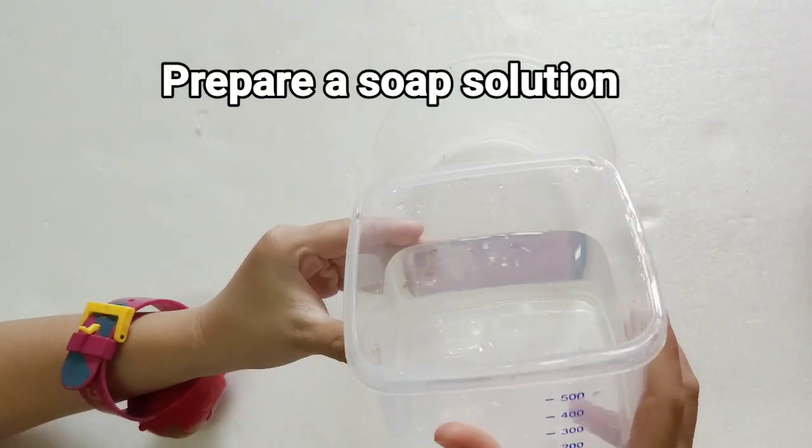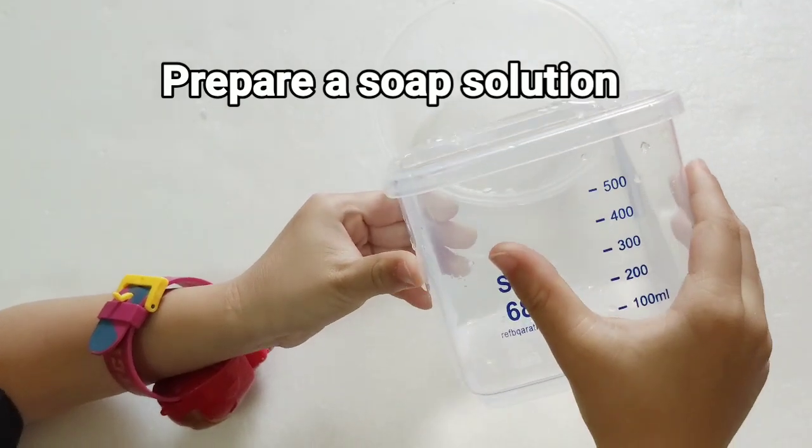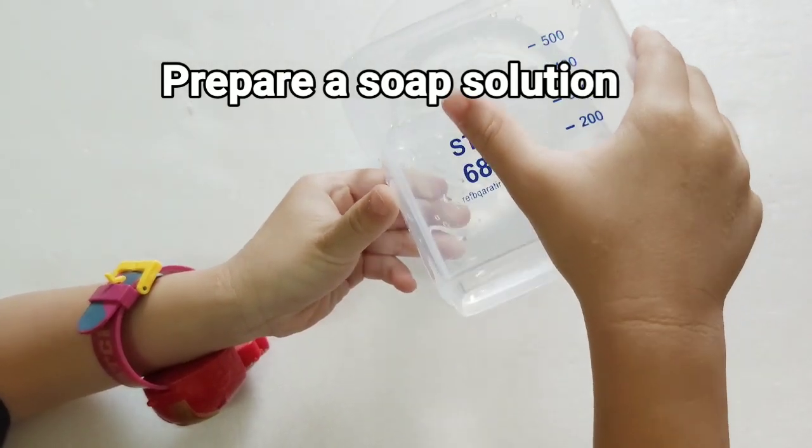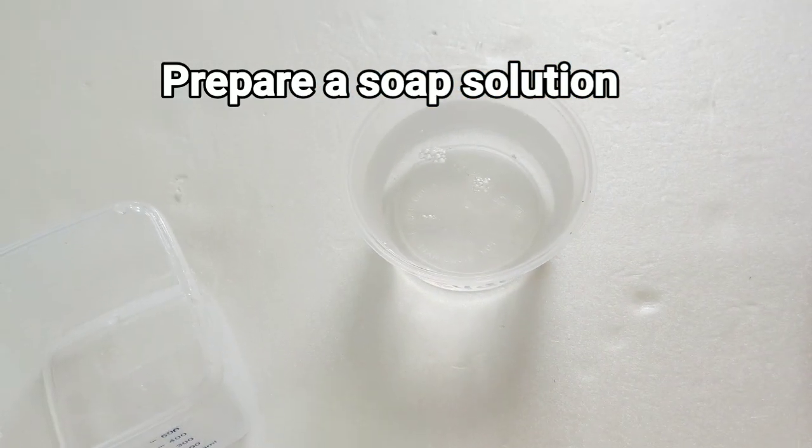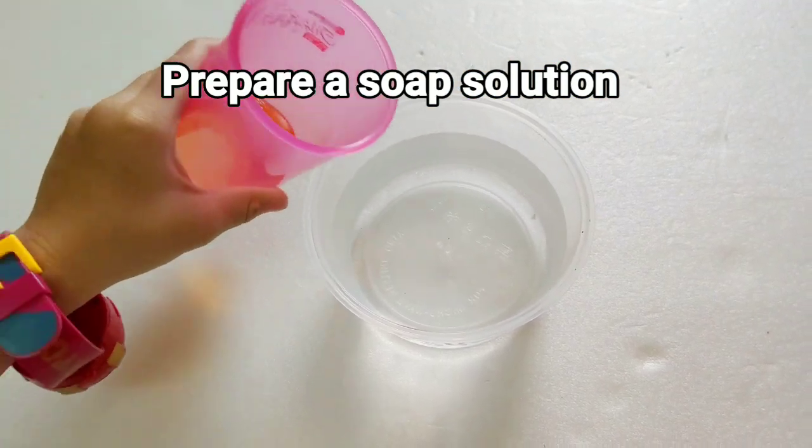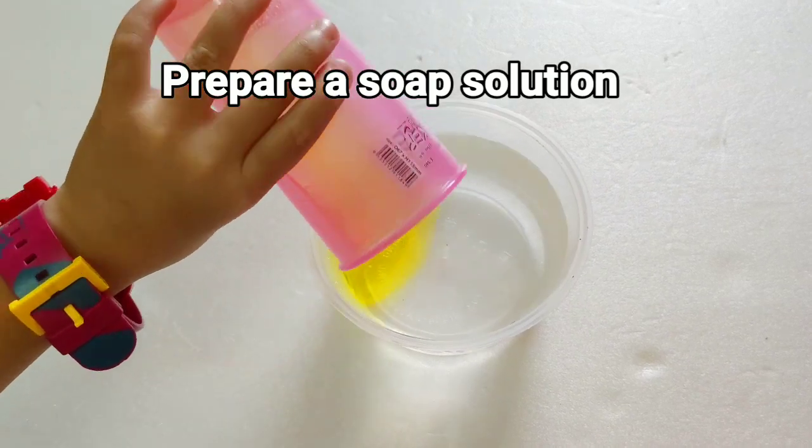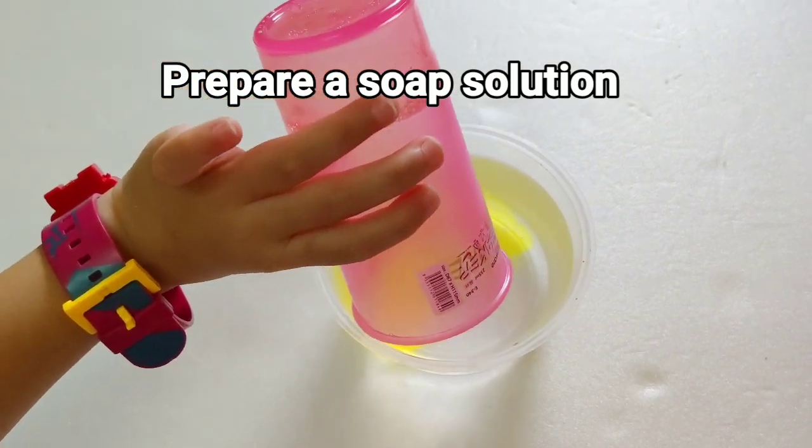First, we need to prepare a soap solution. Pour water into the plastic container. Then we need to put the dish washing liquid into the water.